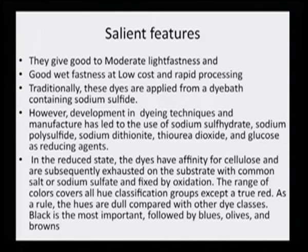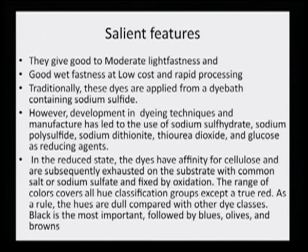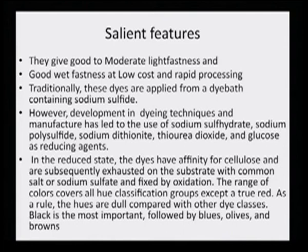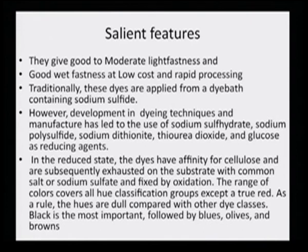Sulphur dyes give good to moderate fastness and good wet fastness at low cost and rapid processing. Traditionally, these dyes are applied from a dye bath containing sodium sulphide. However, developments in dyeing techniques have led to the use of sodium sulfhydrate, sodium polysulphide, sodium dithionite, thiourea dioxide, and glucose as reducing agents. In the reduced state, the dyes have affinity for cellulose and are exhausted on the substrate with common salt or sodium sulphate and fixed by oxidation. The color range covers all hue groups except a true red; hues are generally dull compared with other dye classes.